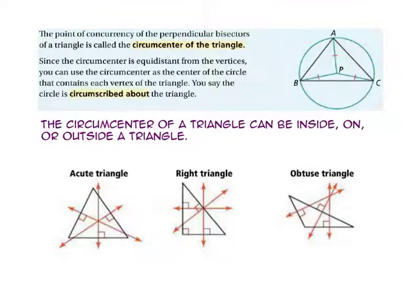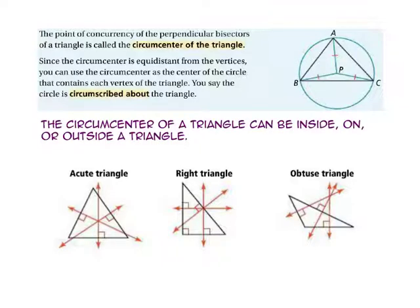The circumcenter of a triangle can be inside, on, or outside of the triangle. In an acute triangle, the circumcenter is inside the triangle. In a right triangle, the circumcenter is on the hypotenuse of the triangle. And in an obtuse triangle, the circumcenter is outside of the triangle.